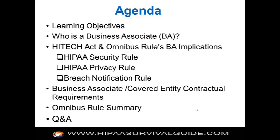Today's training agenda is as follows: we're going to review learning objectives, spend quite a bit of time looking at who is a business associate, then turn our attention to the HITECH Act and omnibus rule's business associate implications with respect to the security rule, the privacy rule, and the breach notification rule. Next we'll talk about business associate and covered entity contractual requirements, which now include contractual requirements between a business associate and a subcontractor, and finally we'll close with a summary of the omnibus rule that impacted business associates.